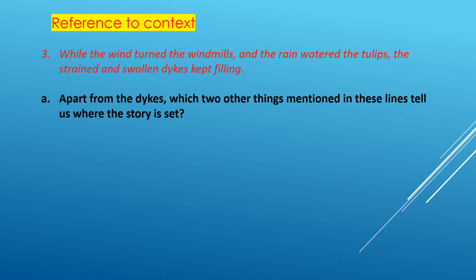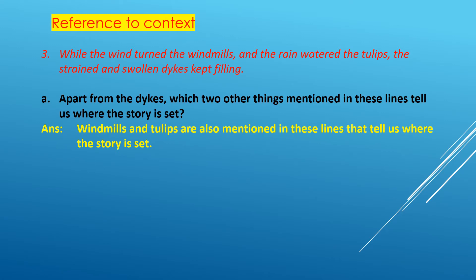Question A: Apart from the dikes, which two other things mentioned in these lines tell us where the story is set? Just look at these lines and find out - which two other things are mentioned here other than dikes? Windmills and tulips. So the answer is: windmills and tulips are also mentioned in these lines that tell us where the story is set.